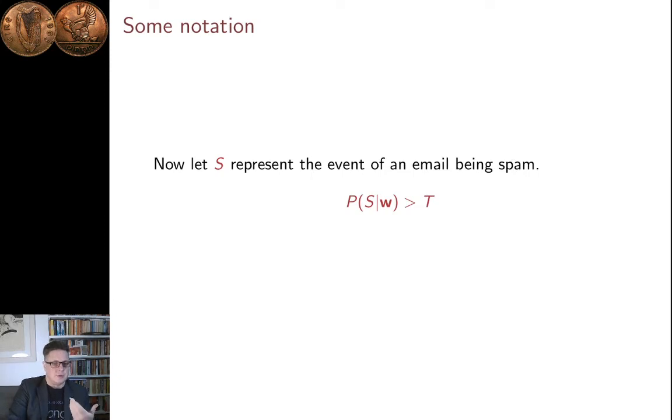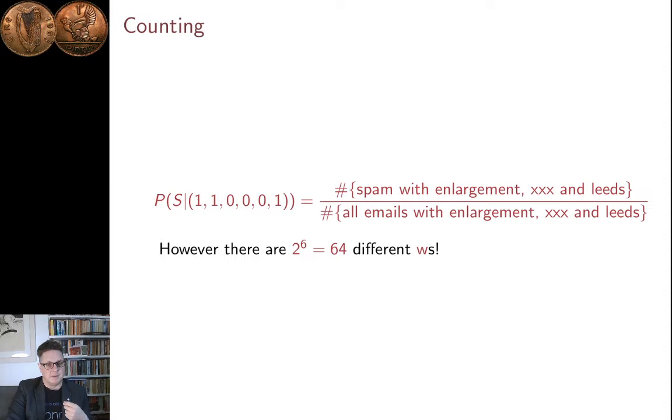And so, what you're going to do is you're going to work out the probability of spam given this characteristic of the emails. Once the email is characterised by these three words and the absence of the other three words, we're asking is this likely to be spam, given this characteristic. And so, we'll have some sort of threshold. We'll want to estimate this probability, then you'll have a threshold T, and if the probability is greater than the threshold that it's spam, it will be put into your spam folder and won't show up in your inbox. That's the idea of a spam filter.